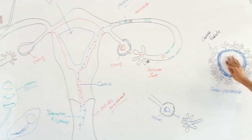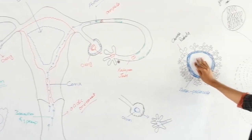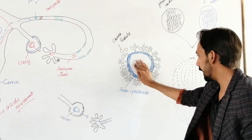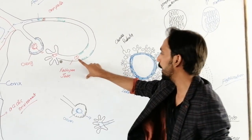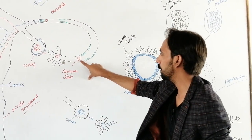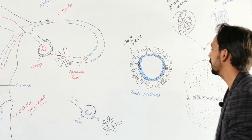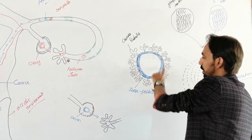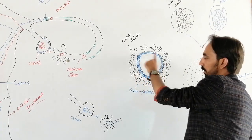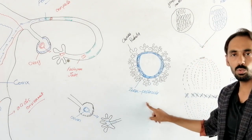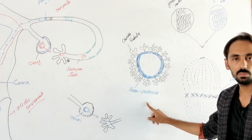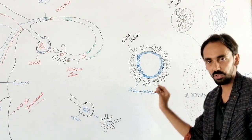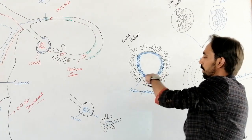This is our egg. And our egg has a protective layer surrounding it, which is called zona pellucida. This is a very tough and gel-like structure, which is called zona pellucida.